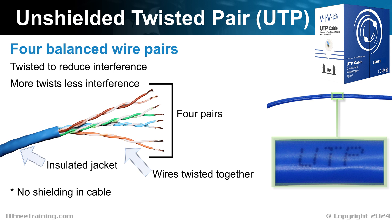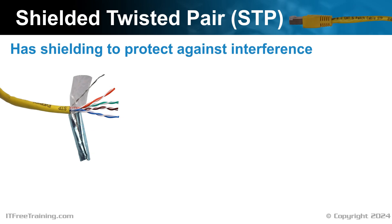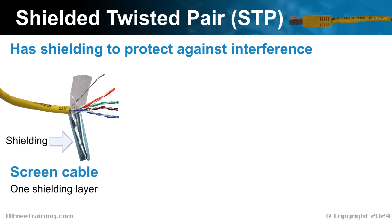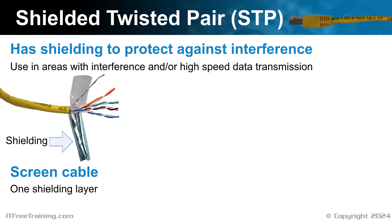If your installation requires running cable through areas with devices that generate significant electromagnetic interference, be aware that there are alternative cable types specifically designed for such environments. To protect against electromagnetic interference, there is shielded twisted pair, or STP. This cable type has electromagnetic shielding inside the cable to protect it against interference. The basic type is screened cable, which has one layer of shielding around all four pairs of wire.